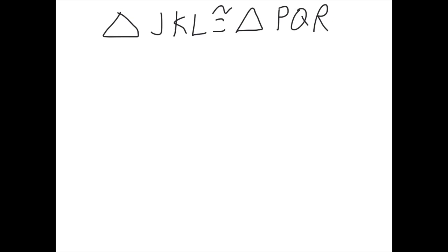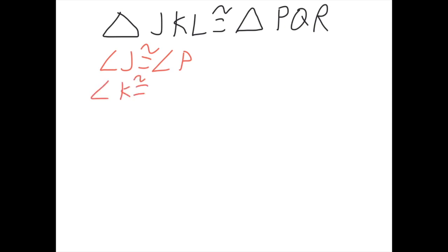By the way, it is assuming these triangles are not connected and that there are no other angles. So, angle J is congruent to angle P. Then we can do the same for the others — middle spot K and Q, so angle K is congruent to angle Q. And the last one, angle L is congruent to angle R.